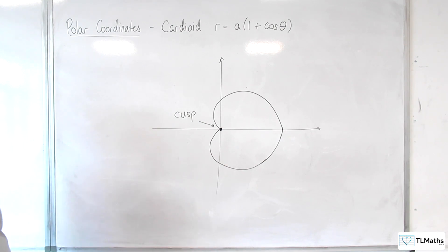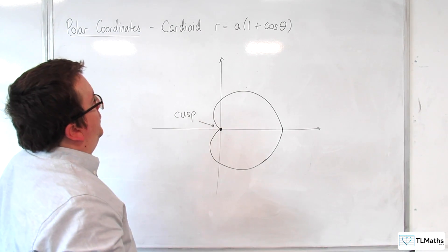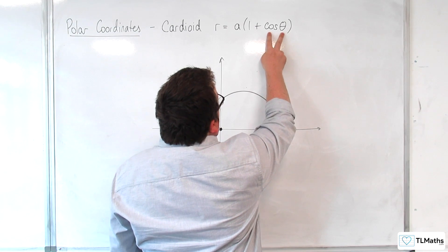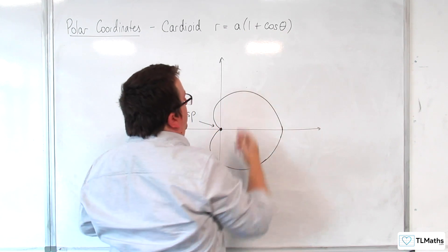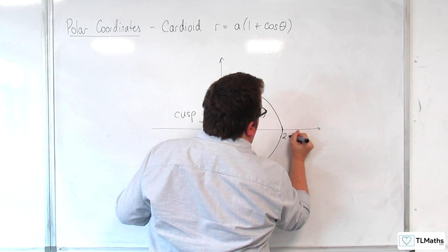Now, when theta is 0, cosine theta is 1, so you get A times 1 plus 1, so this point is 2A.